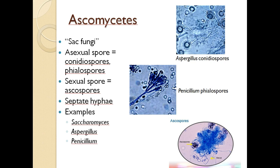The ascomycetes are the sac fungi. Their asexual spore is called a conidiospore, sometimes further classified as a phialospore in the case of Penicillium. Their sexual spore is an ascospore, and they have septate hyphae. Examples include Saccharomyces, a yeast used in bread production, as well as Aspergillus and Penicillium — two molds you'll have a chance to see in lab — which are also ascomycetes.